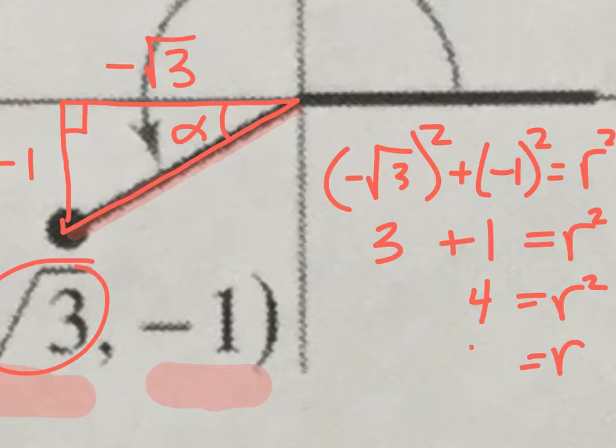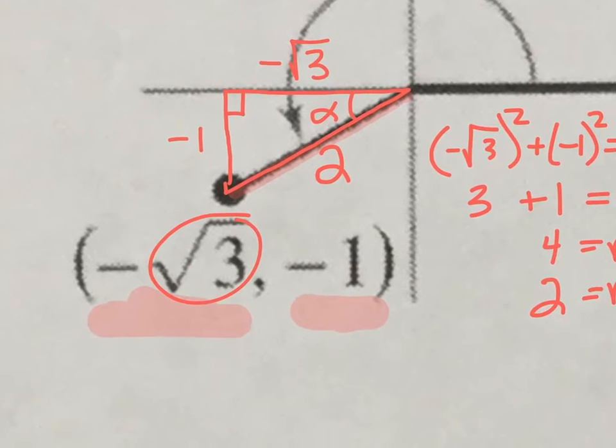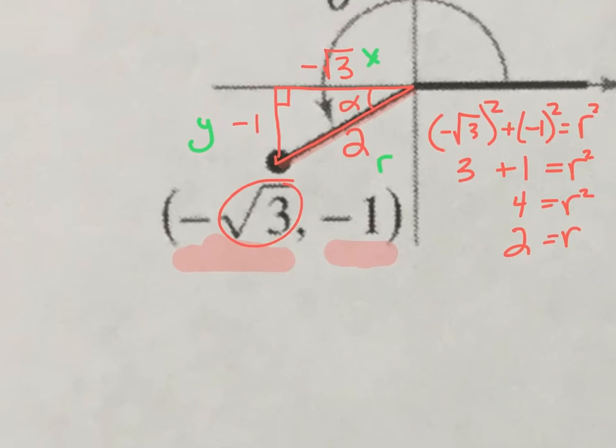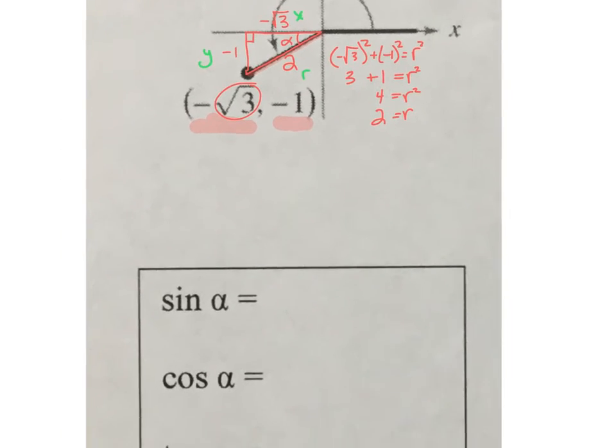A positive radius. The radius of any circle is always positive no matter which way it might point. So with those three numbers, knowing that this is the y value, this is the x value, and that's your radius, we can write down our six trig ratios.